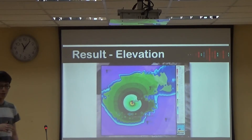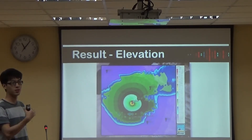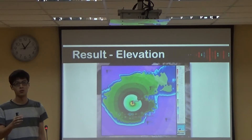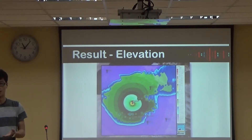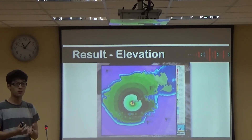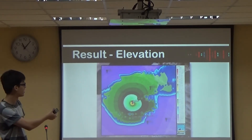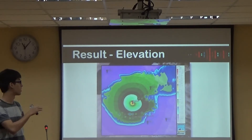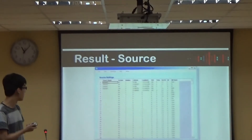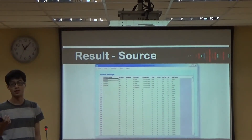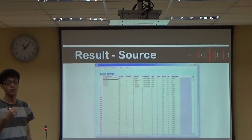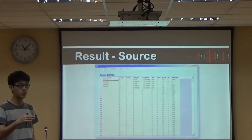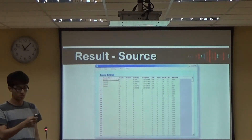I will talk about what kind of information you can obtain using this program. First, regarding the elevation part: when you input the parameters of the noise source — the location, point, and type of noise source — you can see variations showing how noise spreads differently from different altitudes. By entering the source settings, the people running this program can easily understand what kind of noise sources they have in their industrial practice and reduce the source accordingly.